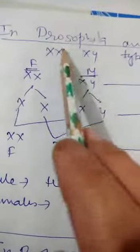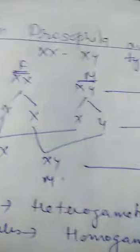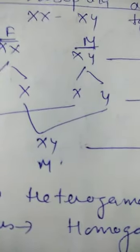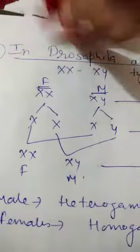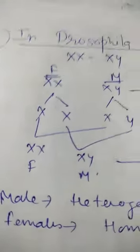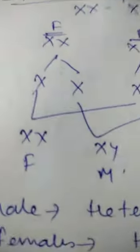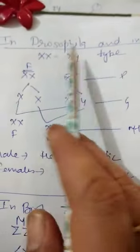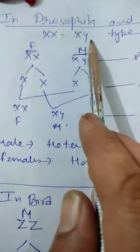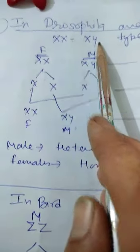Now we come to Drosophila — Morgan's experimental organism in which Morgan studied linkage. Sex determination in Drosophila and in human beings is the same: XX/XY type of sex determination.